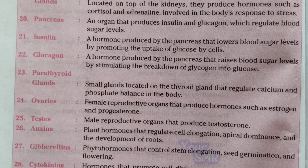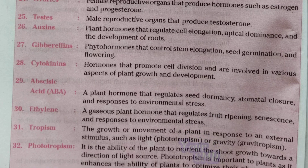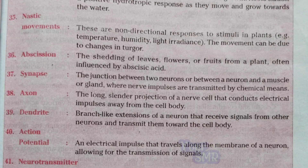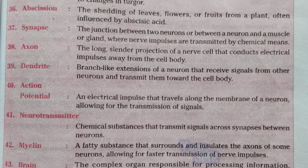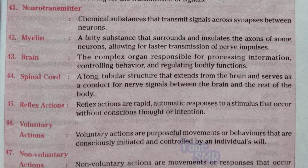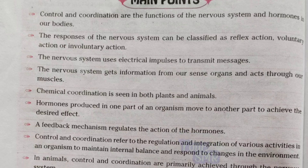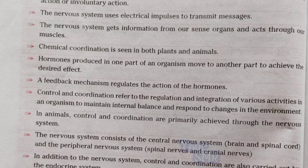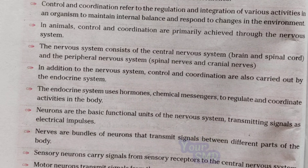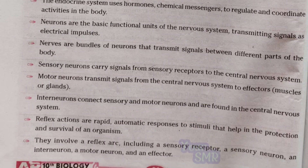The most important concepts in this chapter are brain functions, brain parts, cerebellum functions, reflex arc, and involuntary actions — all differences are very important. After that, phototropism is very, very important and will definitely be asked in your examinations. It may be the last question, the 16th or the 17th question, so phototropism is very important from this chapter.